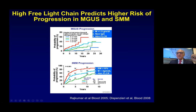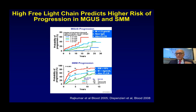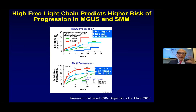On the smoldering myeloma side, there are three different features. If all three are present, then smoldering myeloma patients progress 75% of the time, and they progress within five years. These are the patients where we are doing a lot of research to see how we can prevent the progression, or whether we should be treating them as myeloma. If only one of the three features is present, the chance of progression is only 25%, and over 10 to 15 years, some of these patients never progress to myeloma. We need to just follow and not treat these patients.